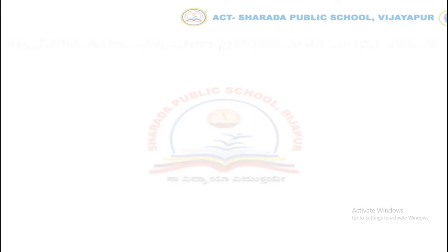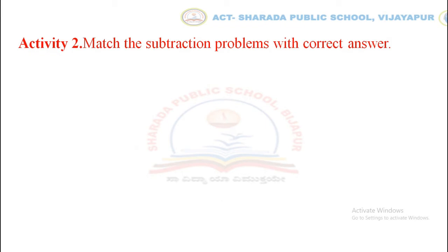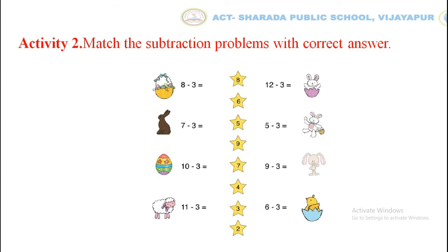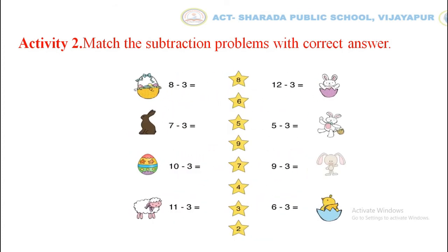Moving towards the next activity — activity number 2: match the subtraction problems with the correct answer. Children, look at the chart. The first question is 8 minus 3. We have to draw a line towards the correct answer. 8 minus 3 equals to 5, so draw a line towards 5. Let us do one more example: 7 minus 3 equals to 4. Draw a line to match the number 4. Children, solve the remaining problems yourself.